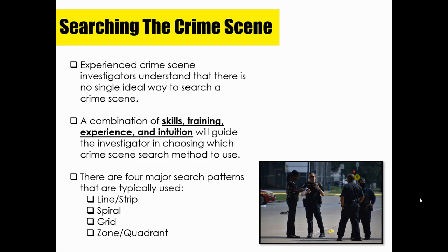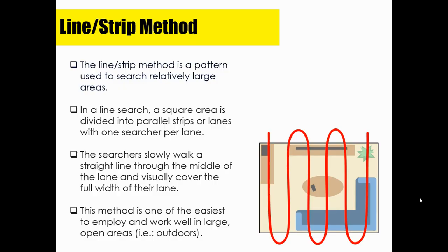There are several options for search patterns, but today we're focusing on the four major ones most commonly used. In the line or strip method, investigators divide the search area into parallel strips or lanes, where one searcher is assigned a lane and walks slowly down a straight line through the middle of the lane, visually covering the full width of their lane.